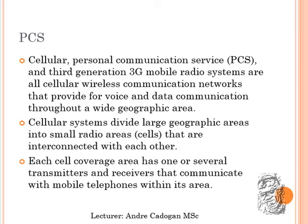Personal communication systems, cellular personal communication service, and third-generation 3G mobile radio systems are all cellular wireless communication networks that provide voice and data communication through a wide geographic area. Cellular systems divide large geographic areas into small radio cells called cells — hence why they are called cellular phones — that are interconnected with each other.